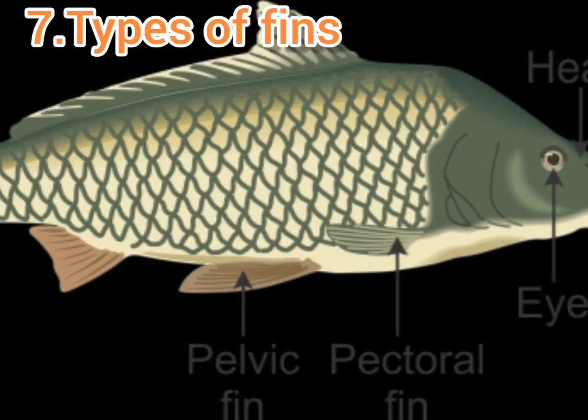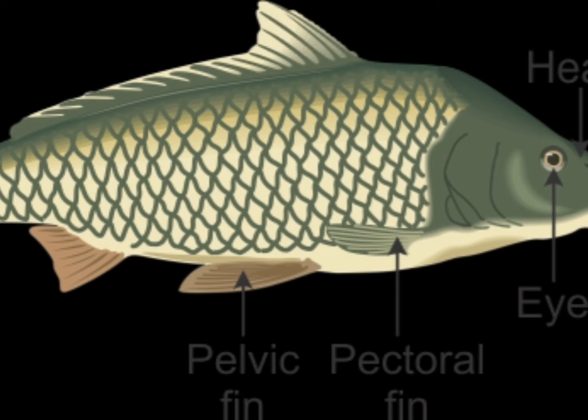The carp has various types of fins: the dorsal fin, the pectoral fin, the pelvic fin, the anal fin, and the caudal fin.